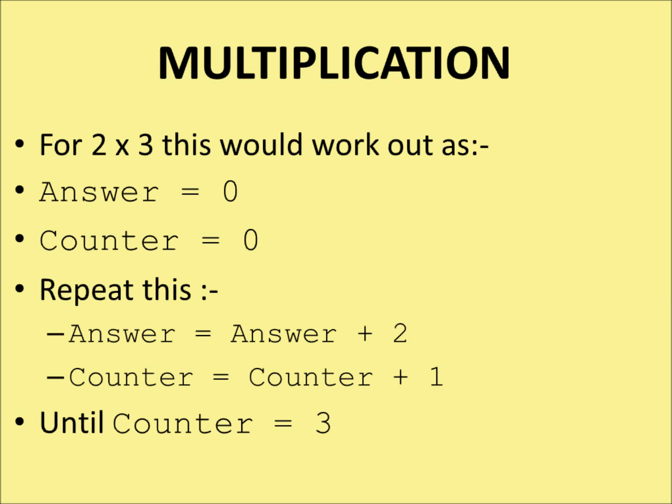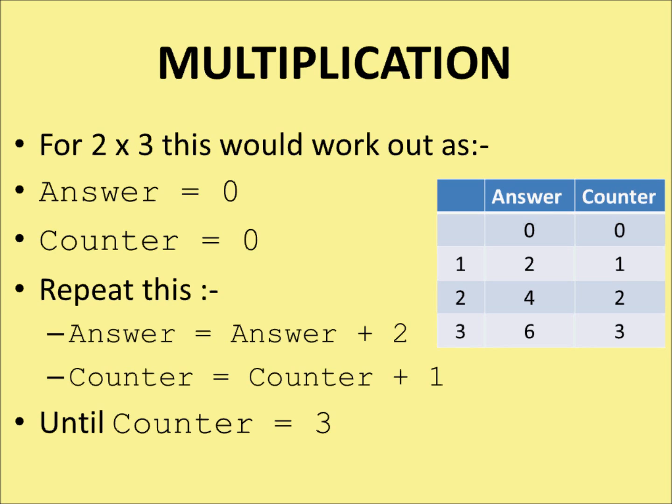Let's look at that in a slightly different way. Here's a little table. We start off with answer and counter as 0. The first time we go round the loop, the answer is set to 2 and the counter is set to 1. Since 1 is not the same as 3, we go round the loop again. The second time round, answer becomes 4 and counter becomes 2. 2 is not the same as 3, so we go round again. Answer becomes 6 and counter becomes 3. Now counter is 3 — we stop.